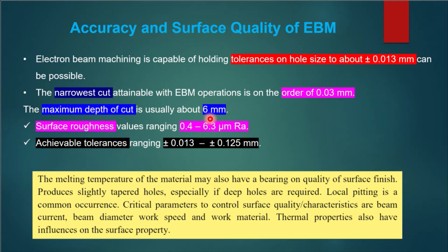The maximum depth of cut is 6 mm. Surface roughness — the undulations on the surface — is 3.0 micrometers. Focal length, lens current, spot size, and energy density all affect the surface quality.